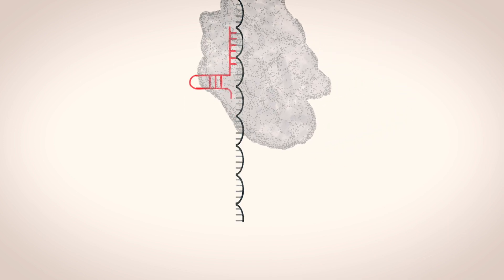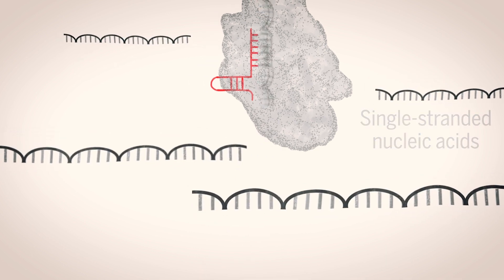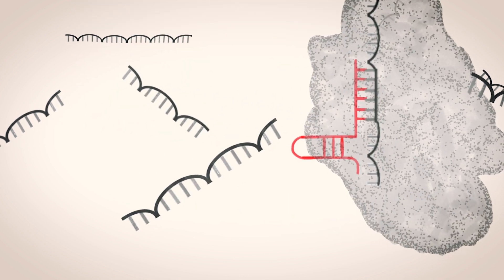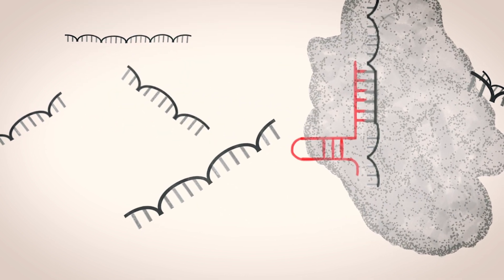After they make the targeted cut, some go into a feeding frenzy and cut any single-stranded nucleic acids nearby. These are the Cas enzymes used in detection systems.